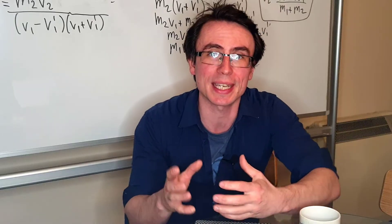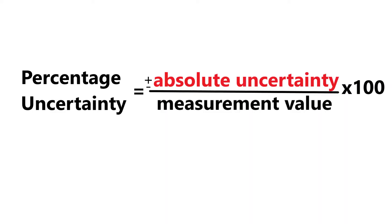Your percentage uncertainty is given by plus or minus the absolute uncertainty divided by your measurement value multiplied by 100.